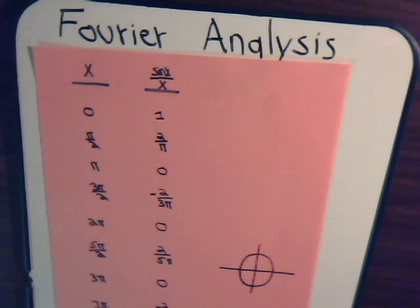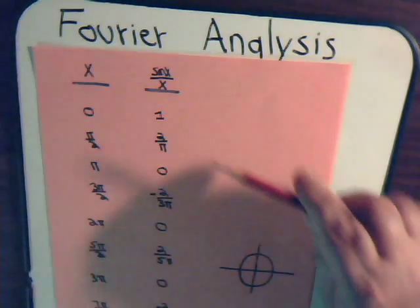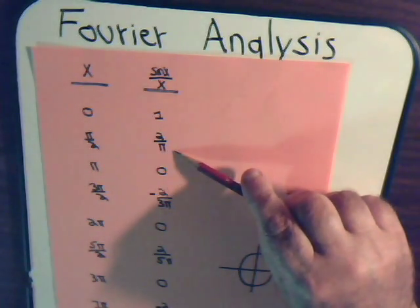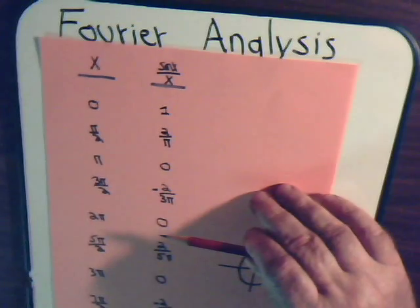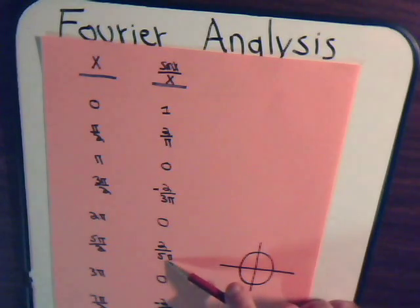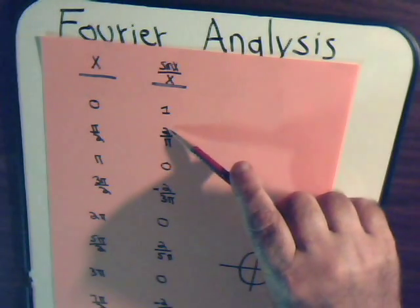So notice that here we start at 1, then it's above the x-axis by this much, crosses the x-axis at 0. Now it rises above the x-axis, but not as high as what it was before.